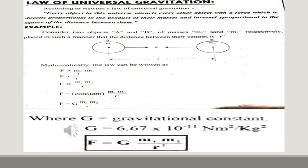Consider two bodies, A and B. As you can see in the figure, body A has mass M1 and body B has mass M2, and they are placed with their centers at distance R from each other. According to Newton's Law of Gravitation, the force of attraction exerted by body A on body B is the same in magnitude but opposite in direction to the force exerted by body B on body A.